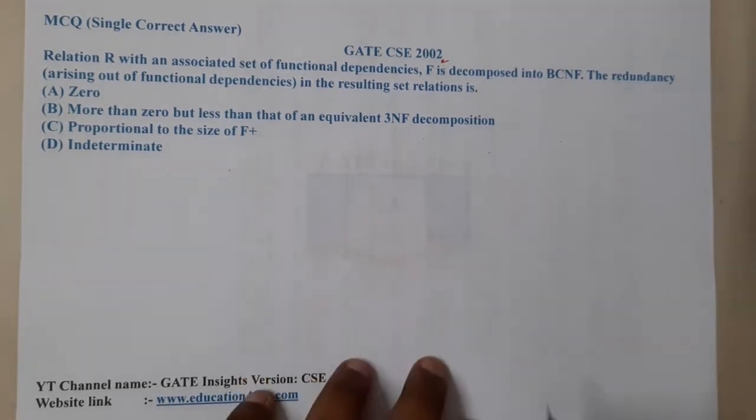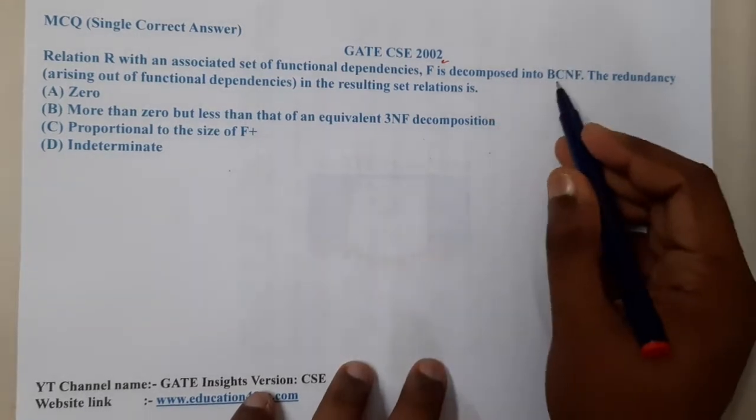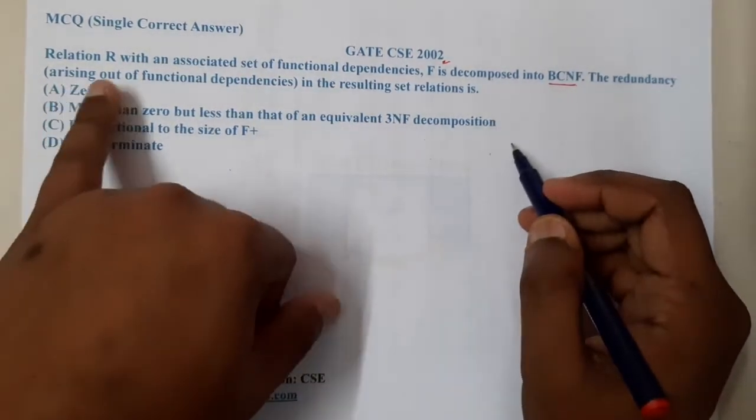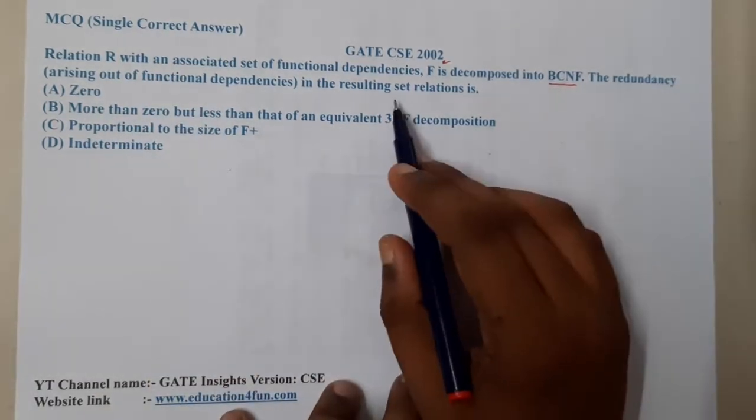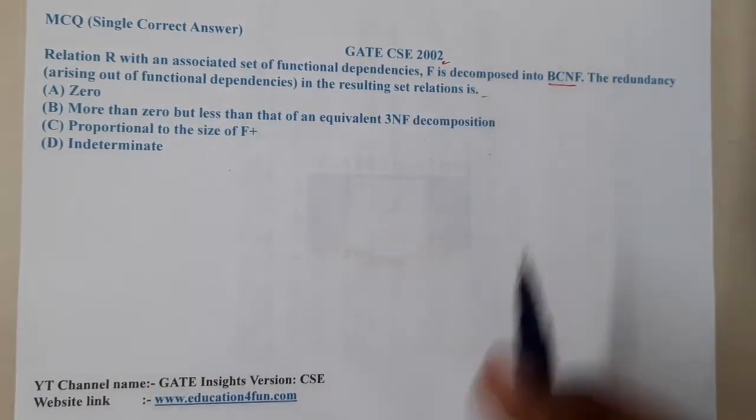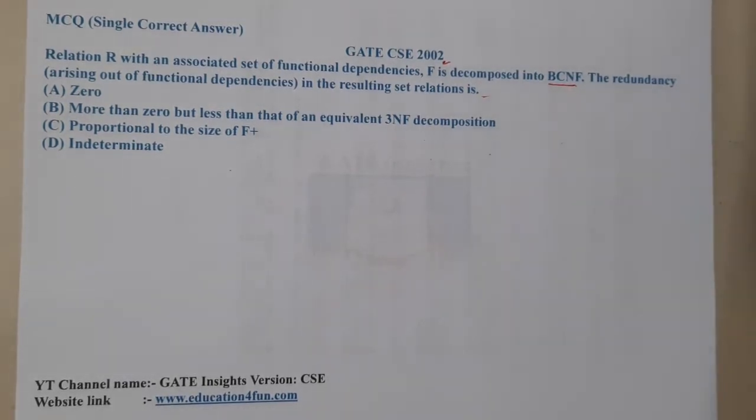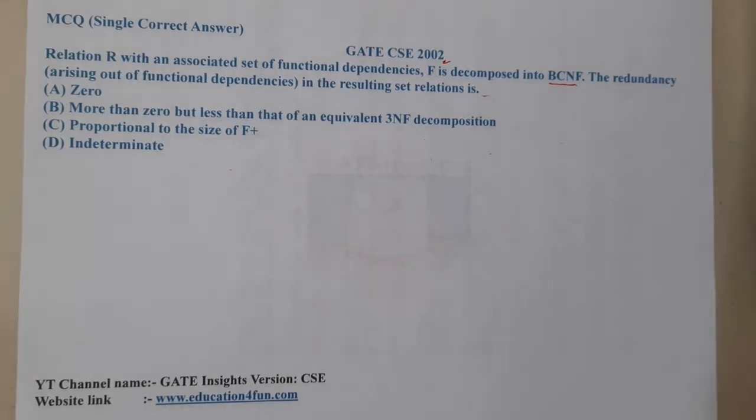The redundancy arising out of functional dependency in the resulting set is: Option A says it is zero, Option B says more than zero but less than that of an equivalent 3NF, Option C says proportional to the size of F+, and Option D says indeterminate.